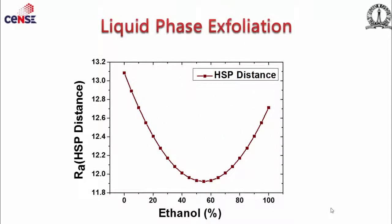Comparing across ethanol fractions from zero to one hundred percent, the lowest R_A values are in a narrow range varying at the second decimal order — around 11.92. Since theoretical and experimental results can differ due to other key factors like surface energy, we experimentally varied the ratio and found that 65:35 ethanol:water is the optimum.